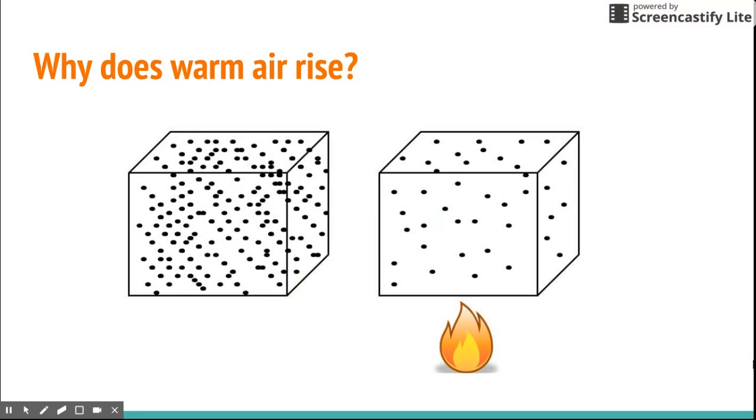So why does warm air rise? To understand this idea, we see that the flame heats up the air molecules inside the cube on the right. The molecules move faster and faster as they're heated and they spread out, making the hotter air less dense than the colder air. That is, there are fewer molecules per unit of volume in the hot air than there is in the cold air.